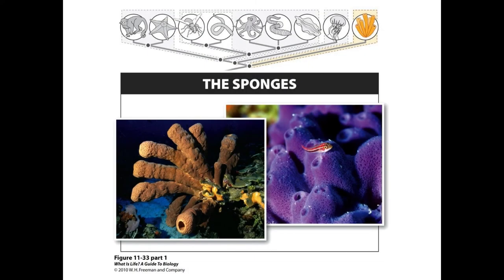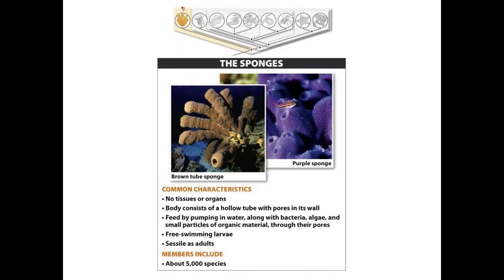Sponges are the simplest animals because they lack tissues and organs. In addition to lacking specialized tissues or organs, sponges are also unable to move as adults — they're sessile. However, they produce free-swimming larvae that allow them to disperse to new locations. Despite their simplicity, sponges are very effective at feeding. Although they're basically a tube with pores, they can strain food particles from water, including bacteria, algae, and organic matter.